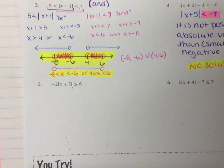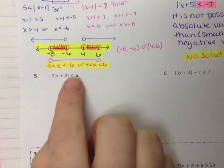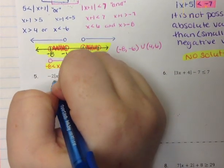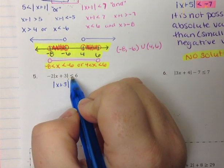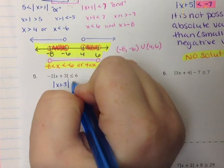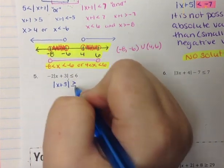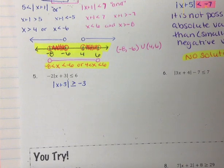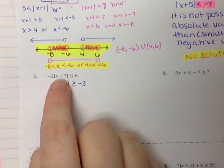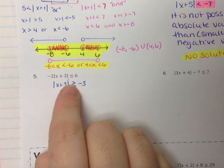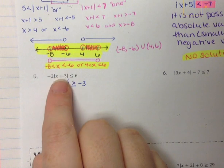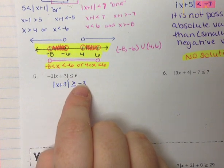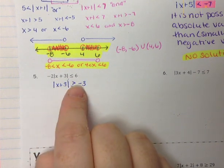On the next example, number 5, we again isolate the absolute value by dividing by negative 2. We get the absolute value of x plus 3 is greater than or equal to negative 3 — remember, when you divide an inequality by a negative, the inequality flips. Now we check: the absolute value gives a positive number. A positive number is always greater than a negative, so no matter what value we get, it will automatically be greater than a negative. We don't have to do anything else.